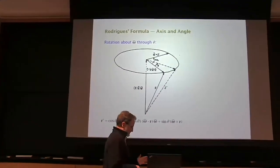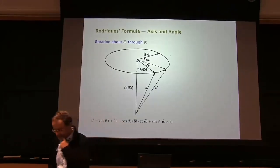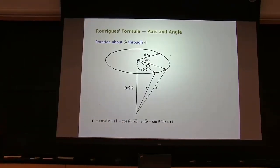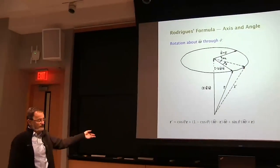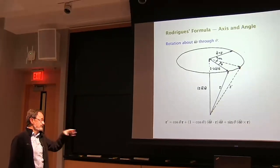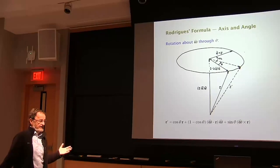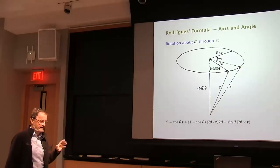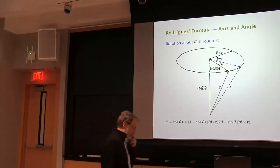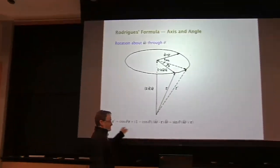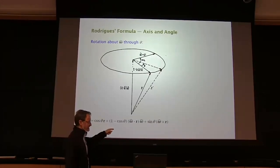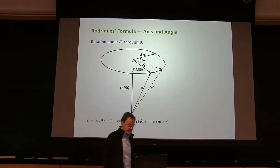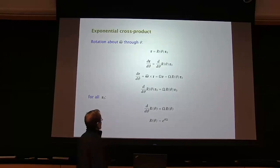The disadvantage of axis-and-angle is composition: if you have two rotations given as axis and angle, how do you combine them into a single rotation? By Euler's theorem there's a single rotation that represents the combination, but the way to do it is to convert both to orthonormal matrices, multiply them, and convert back. So you can rotate vectors easily, but composing rotations is hard. The exponential Lie algebra view is another approach, but we'll skip that.